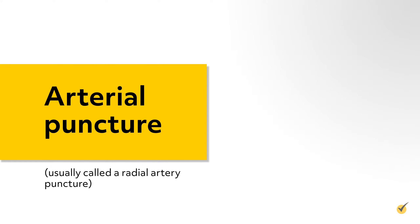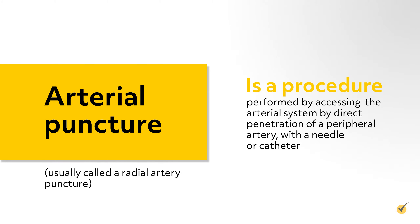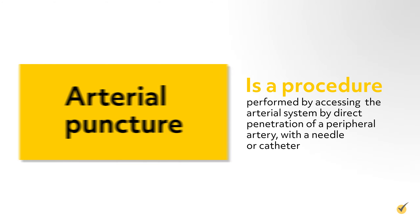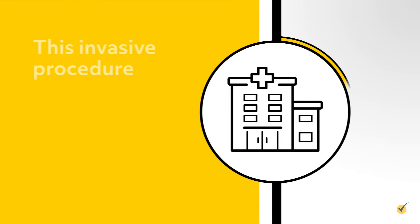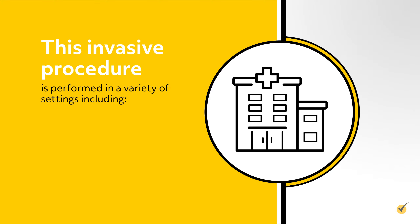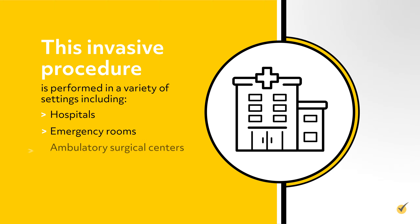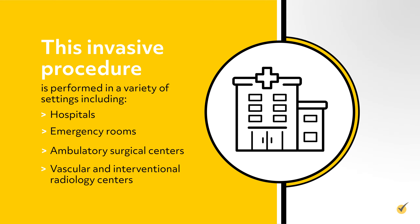To begin, let's review what an arterial puncture actually is. An arterial puncture, usually called a radial artery puncture, is a procedure performed by accessing the arterial system by direct penetration of a peripheral artery with a needle or catheter. This invasive procedure is performed in a variety of settings including hospitals, emergency rooms, ambulatory surgical centers, as well as vascular and interventional radiology centers.